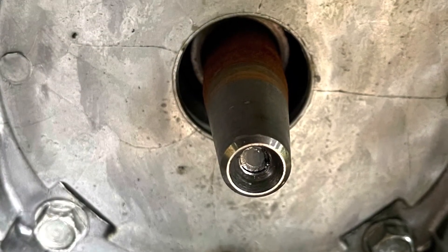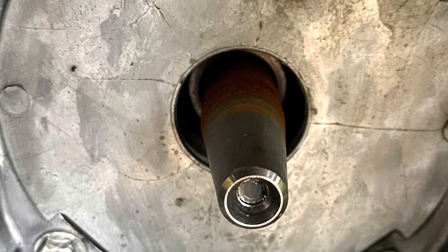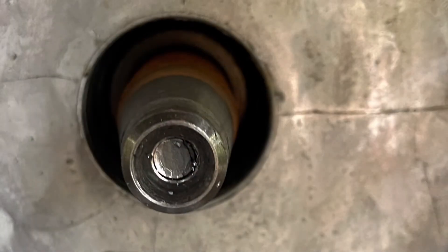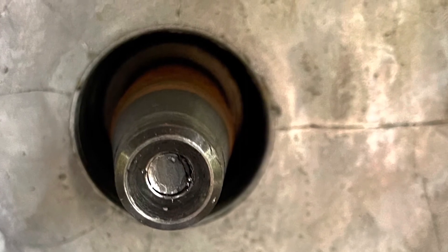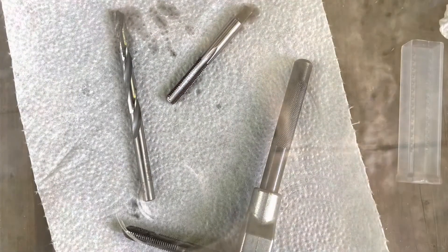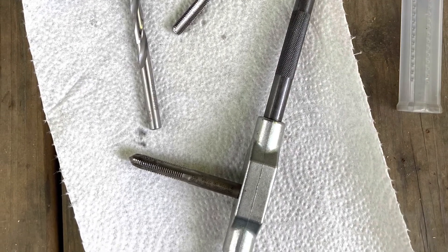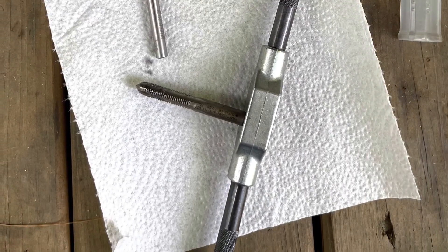As you can see, the end of the broken bolt is stuck inside of the crankshaft, so I had to purchase the correct diameter drill bit as well as a bottoming tap so that we could drill out the remainder of the bolt and re-thread it for installation of the new bolt.